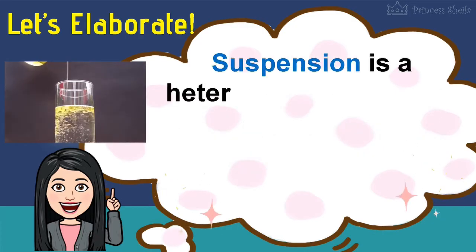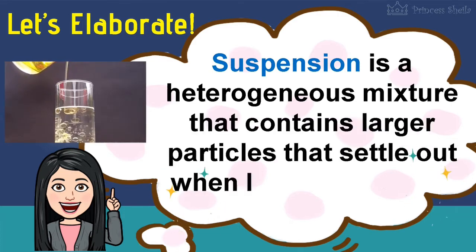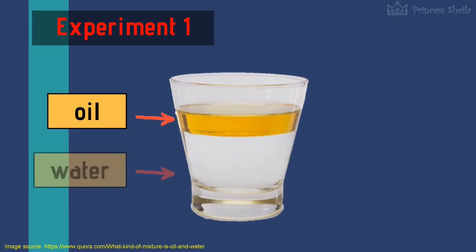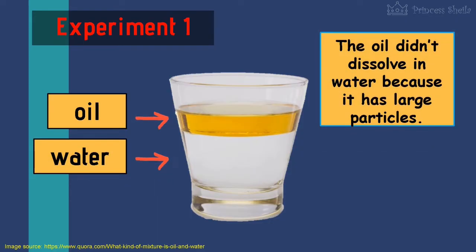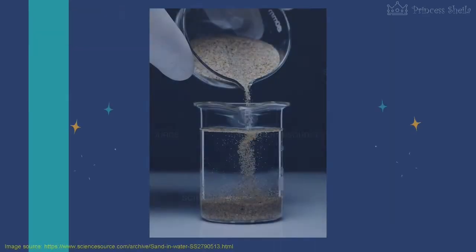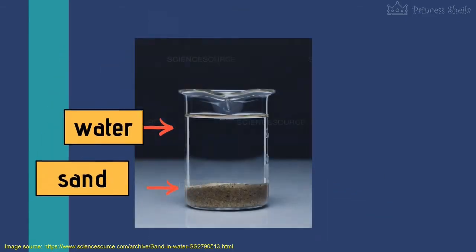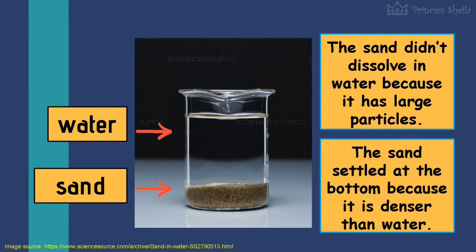Suspension is a heterogeneous mixture that contains larger particles that settle out when left undisturbed. In our first experiment, the mixture of oil and water formed a layer. The oil didn't dissolve in water because it has large particles. When left undisturbed, the sand settled at the bottom because it is denser than water.